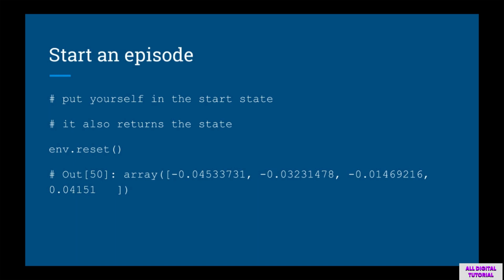Now that we have an environment, we want to run an episode. The first thing we need to do before we start the episode is run the reset function. This puts you into the start state. If you do this in your IPython window, you'll notice that this returns something — it's an array of four floating point numbers. This, as you might naturally guess, is the start state.